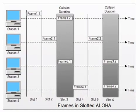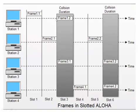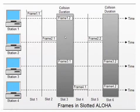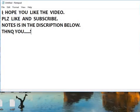In this figure, we can see that time is divided into slots. When station one has a frame, it sends only when the time slot starts — at the beginning of the time slot. If it misses the beginning of the time slot, it has to wait for the next slot. In this condition, we can see less collision compared to Pure ALOHA. Here, frames one, two, and three are successfully transmitted over the network. I hope you liked the video, please like and subscribe. The notes are in the description.